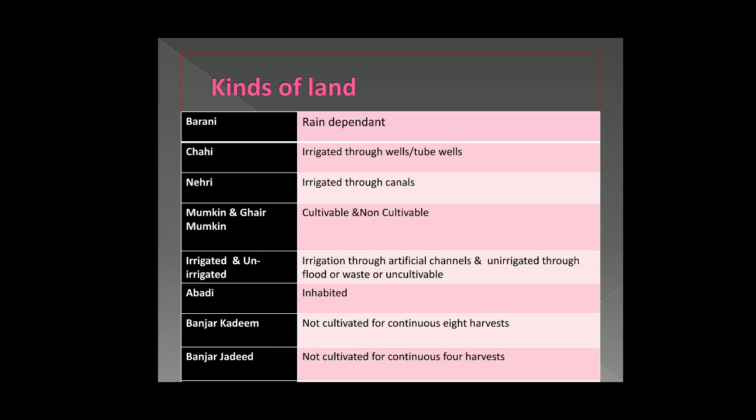Abadi refers to land that is inhabited — where people are living. Banjar Kadeem is land that has not been cultivated for eight consecutive harvests, which equals four years, since there are two harvests per year. Banjar Jadeed is land not cultivated for four consecutive harvests, meaning two years. In both cases, the land was previously cultivable but simply was not cultivated during that period.